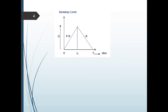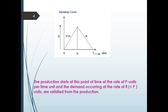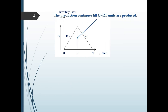This is how one cycle can be visualized. At T equal to 0, we start the system with zero inventory level. Production starts at the rate of P units per time unit and demand occurring at the rate of R units is satisfied from the production. The production continues till Q equals R times T units are produced.